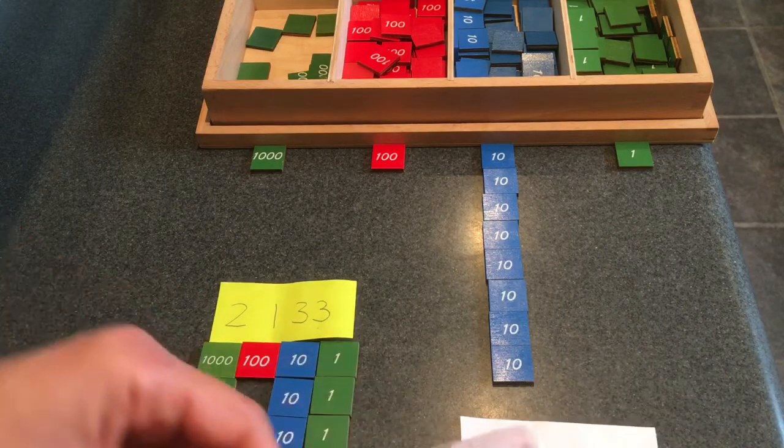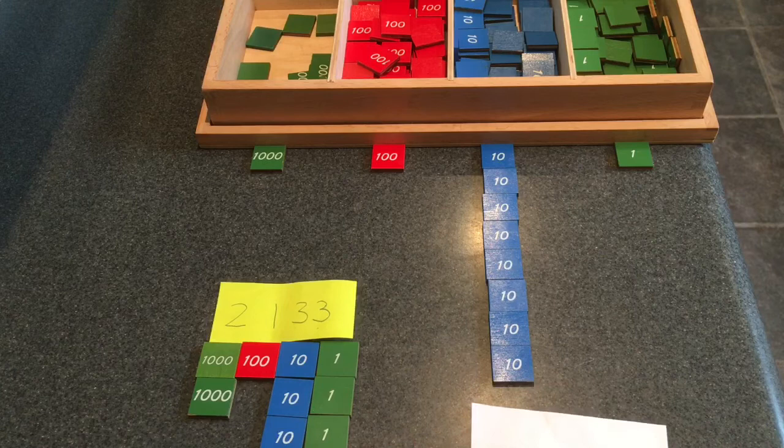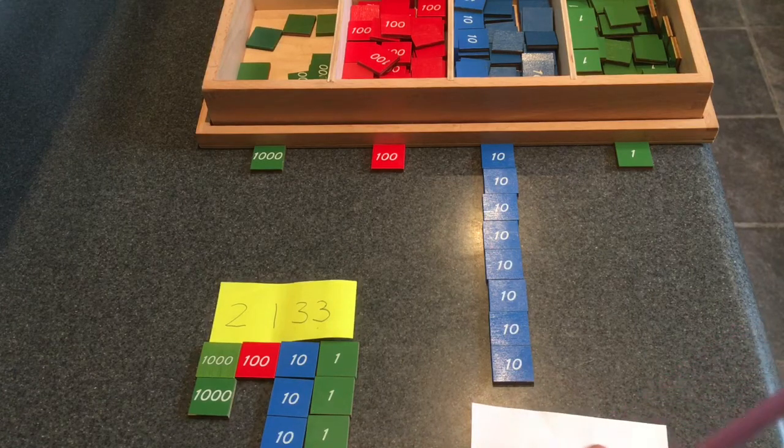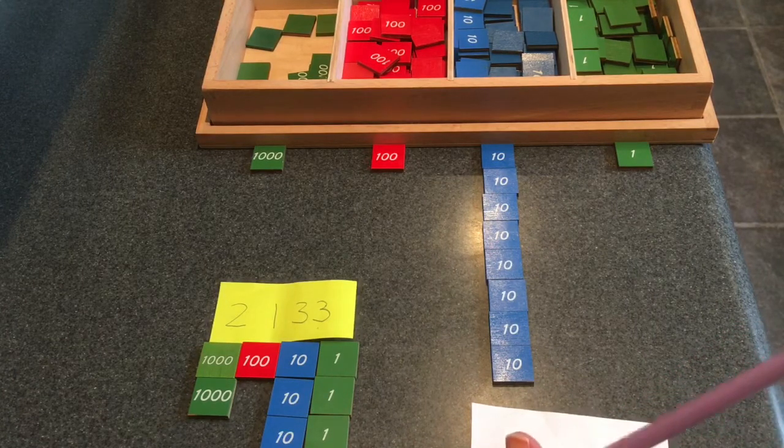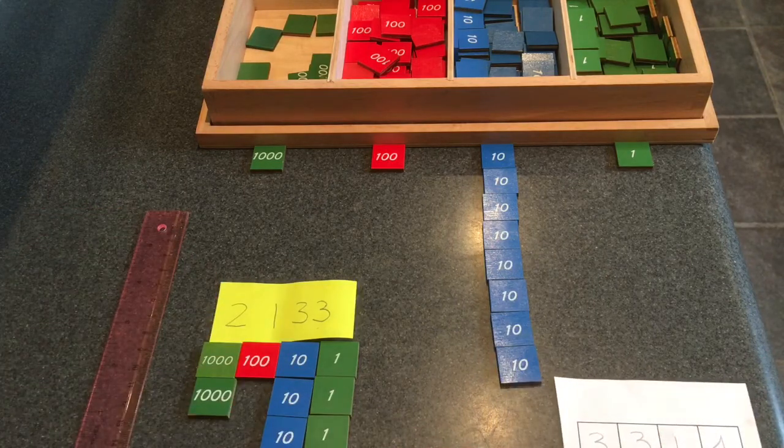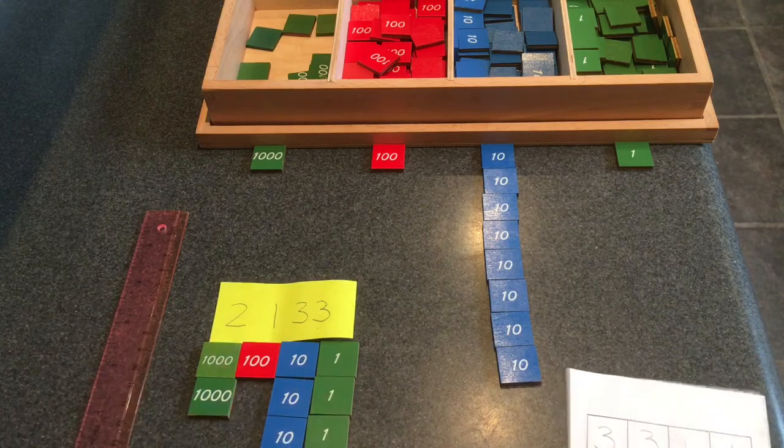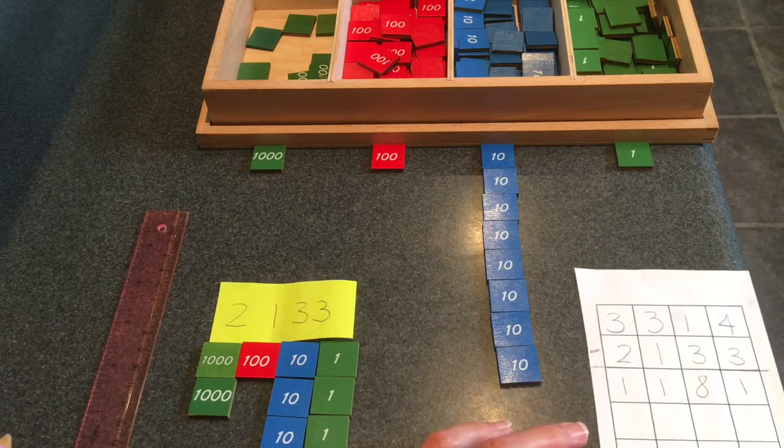Do you remember we can make the equals bar right under the subtrahend and above the difference? And then we can make our minus sign. It says subtraction. It's a straight line going across there. There we are.